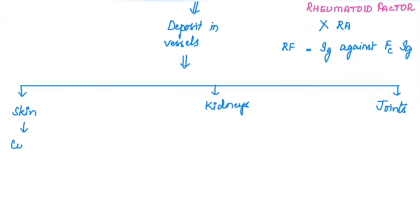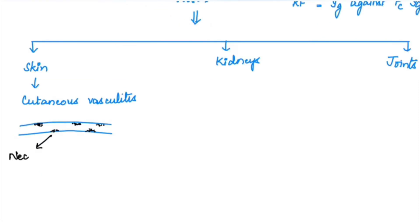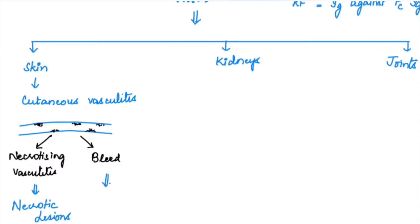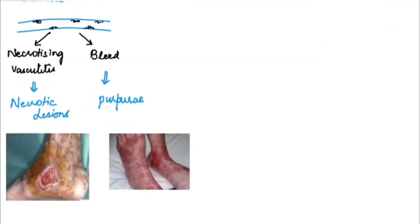When the skin is involved due to immune complex deposition, it leads to cutaneous vasculitis. This can present as necrotizing vasculitis producing necrotic lesions or ulcers on the skin, or as bleeds presenting with purpura, especially common on the medial side of the legs. This is a picture of a necrotic ulcer, and these are the purpura.